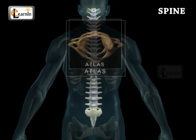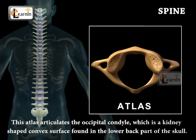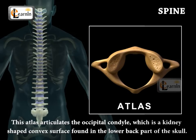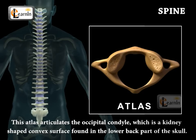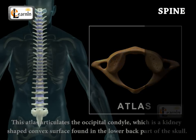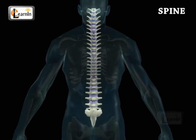The first vertebra is called the atlas, and this atlas articulates the occipital condyle, which is a kidney-shaped convex surface found in the lower back part of the skull.